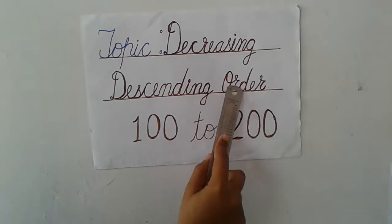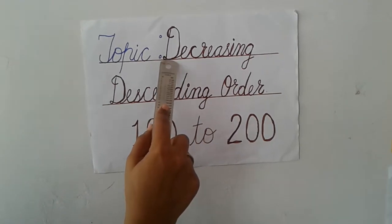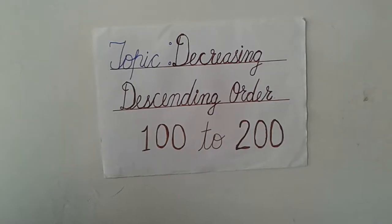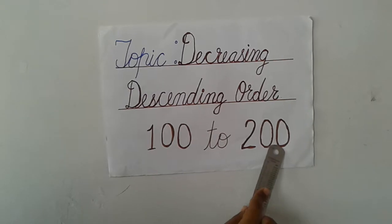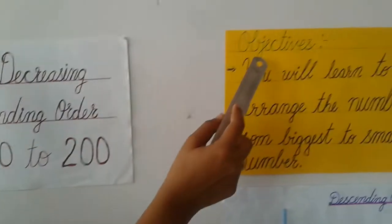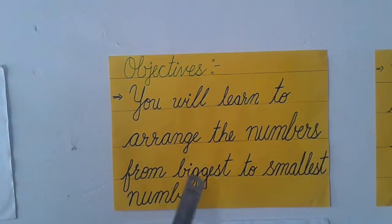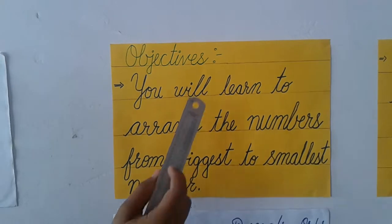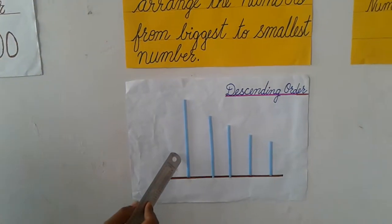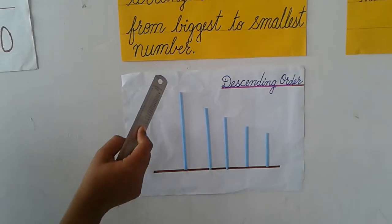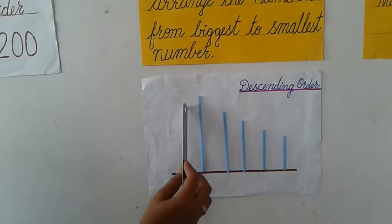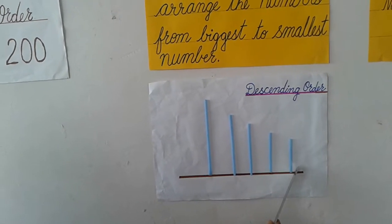Topic: decreasing or descending order. In decreasing or descending order we have to go down — from up to down. You will learn to arrange the numbers from biggest to smallest. Likewise you can see the straws; they are arranged in descending order. The biggest one is first and the smallest one is last.